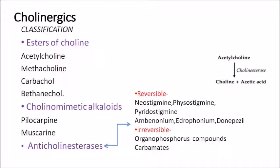The classification of cholinergic drugs has three classes: esters of choline, cholinomimetics, and anticholinesterases. Esters of choline end with 'chol' or 'choline': acetylcholine, methacholine, carbachol, bethanachol. Cholinomimetic alkaloids are compounds mimicking acetylcholine, for example pilocarpine and muscarine.